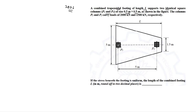This is the trapezoidal footing; the length of the footing is L. The two parallel sides are given: one is 5 meters and the other is 1.5 meters. The footing supports two columns P1 and P2, each of size 0.5 m × 0.5 m — both are square columns.